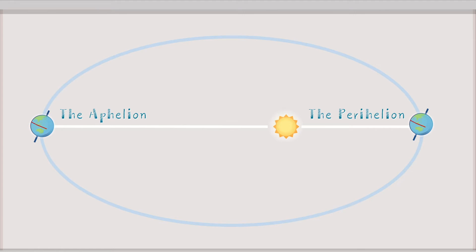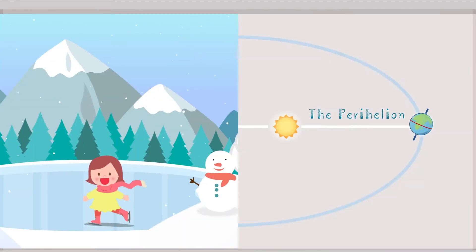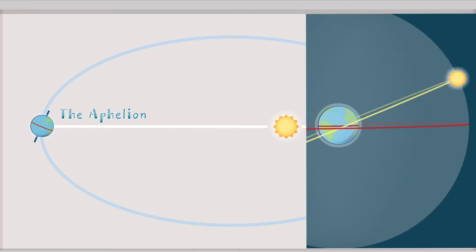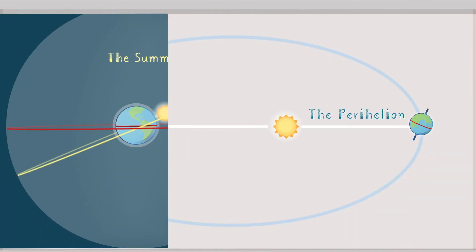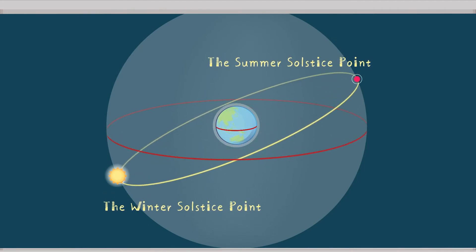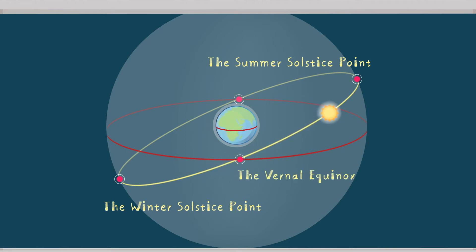In the northern hemisphere, the aphelion is in summer, and the perihelion is in winter. When the northern hemisphere is experiencing summer, the point where the sun is visible is called the summer solstice point. And when the northern hemisphere is experiencing winter, the point where the sun is visible is called the winter solstice point. The equator of the celestial sphere and the ecliptic meet at two points. The point going up from the southern hemisphere to the northern hemisphere is called the vernal equinox, and the point going down from the northern hemisphere to the southern hemisphere is called the autumnal equinox.